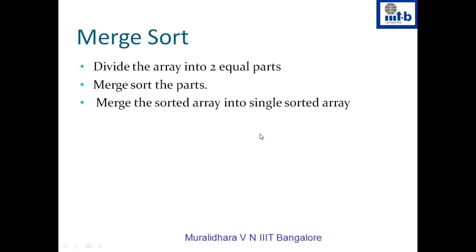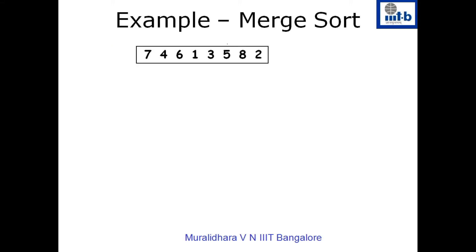In the merge sort algorithm, given an array of size N, we divide this into two parts and sort these two parts recursively, then combine these two sorted sequences into one sorted sequence. Let us look at this algorithm with an example. When we want to sort a sequence, we divide it into exactly half — the first half will have four elements and the second half will have exactly four elements.